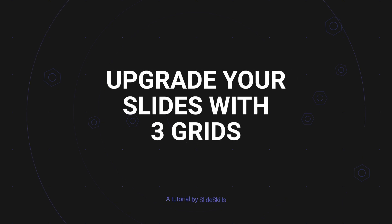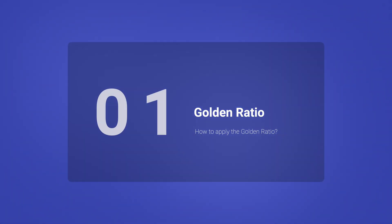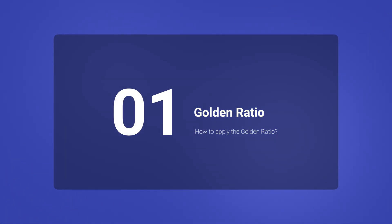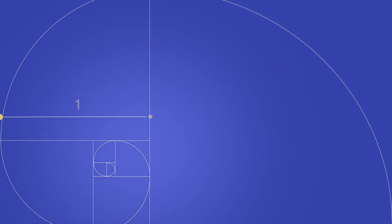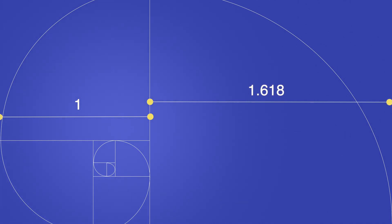Today we are learning how you can upgrade your slides with three simple grids. The first one is the golden ratio and we'll look at how you can apply it to your slides. The golden ratio is based on the Fibonacci sequence and it represents a ratio of 1 over 1.618, which is aesthetically pleasing to the human eye and is often used in design to bring balance and harmony.